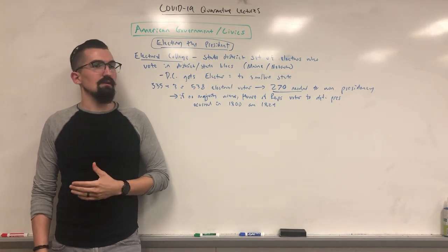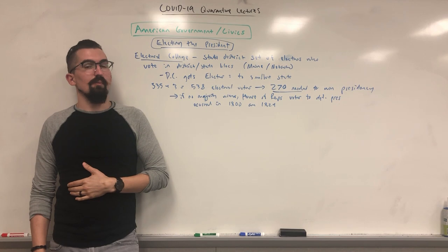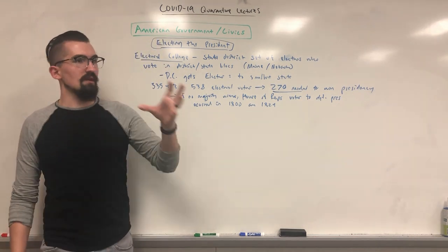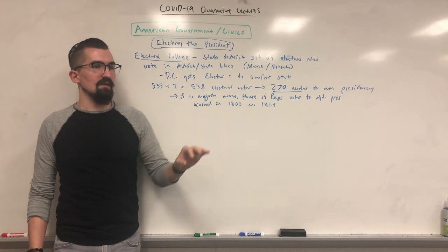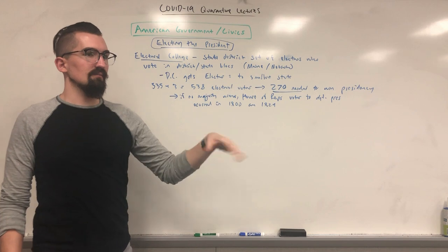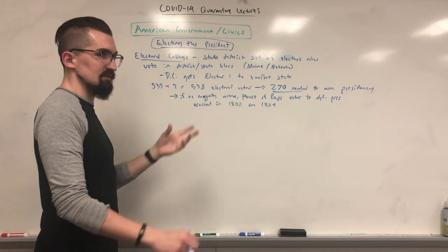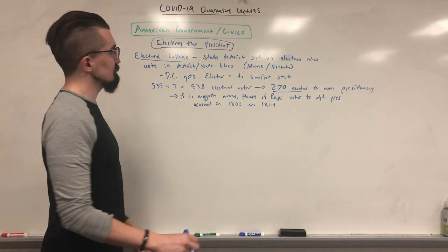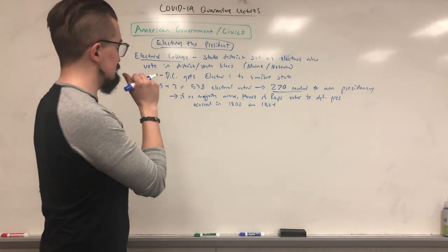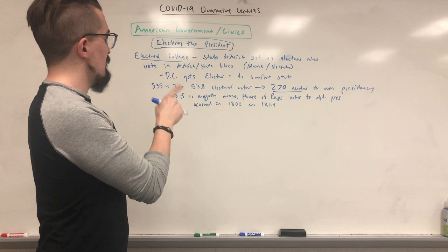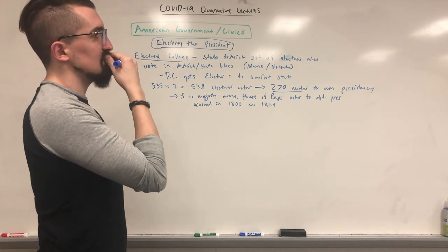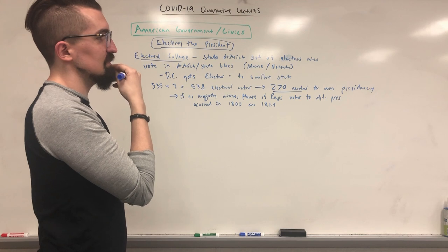This became known as the 'corrupt bargain' because Henry Clay allegedly agreed to get people to vote for John Quincy Adams — even though Jackson was more popular — in exchange for preferences in the executive branch. That's the method by which the president is elected when there is no majority winner.